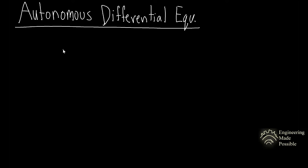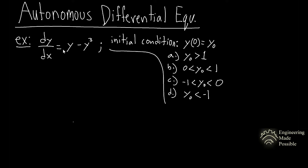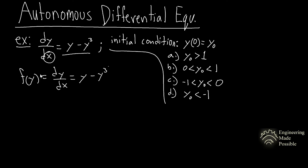An autonomous differential equation is where the independent variable does not show up in the differential equation. For example, consider the autonomous first order differential equation dy/dx = y - y³ with initial condition y(0) = y₀. This is autonomous because the independent variable x is not found in the function — it's only in terms of the dependent variable y. So our function f(y) = y - y³.